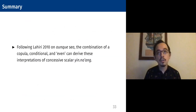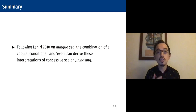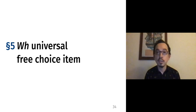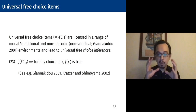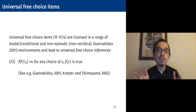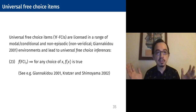So to summarize this section, following Lahiri's work on Spanish aunque sea, the combination of a copula, conditional, and scalar particle even can derive the interpretations of concessive scalar yinang. Now let's move on to the interpretation as a universal free choice item. Universal free choice items are licensed in a range of modal, conditional, and non-episodic environments and lead to the universal free choice inference — roughly, that if you have an argument that's a free choice item x in a particular description, it feels like there's a wide-scope, almost universal quantification: for any choice of x, that proposition with value x is going to be true.